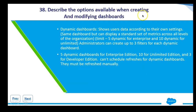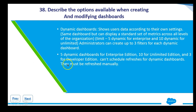Dynamic dashboards show users data according to their own settings and can display a standard set of metrics across all levels of the organization. There is a limit of five dynamic dashboards for Enterprise edition, ten for Unlimited edition, and three for Developer edition. Administrators can create up to three filters for each dynamic dashboard — for example, filtering by fiscal year, quarter, or a specific user. You cannot schedule refreshes for dynamic dashboards; they can only be refreshed manually.